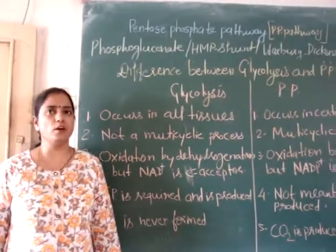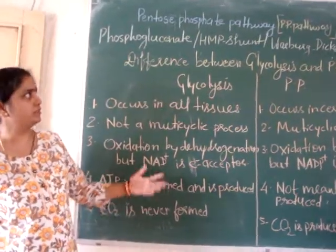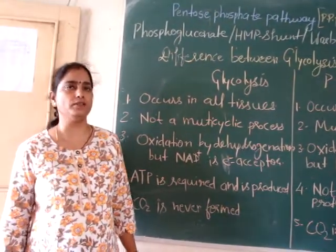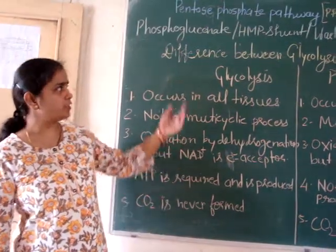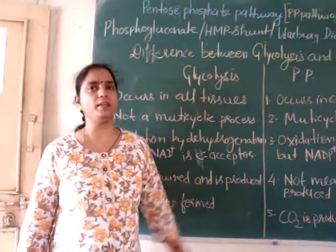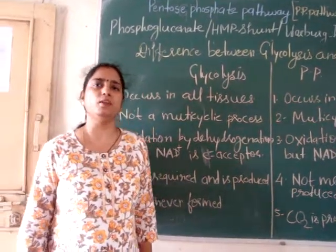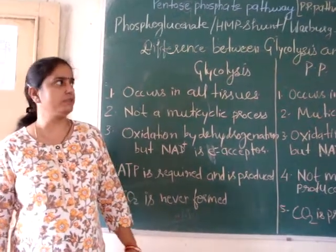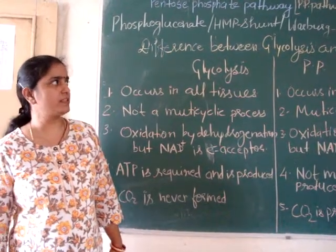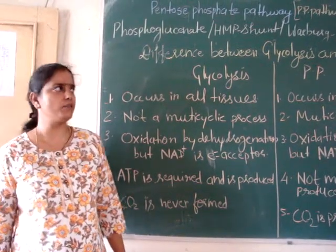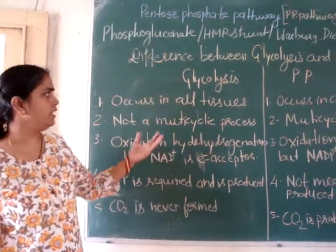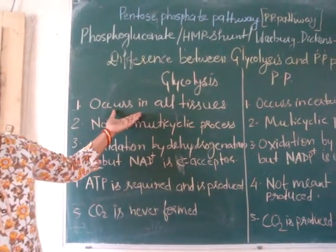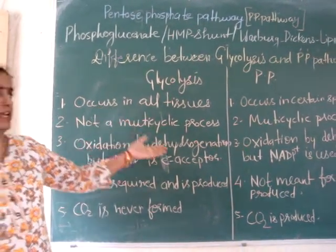In the first part of this video we have seen the reactions of the PP pathway. Now, what is the difference between glycolysis and PP pathway? The precursor for both glycolysis and PP pathway is glucose 6-phosphate. Glycolysis pathway, as all of you know, occurs in all types of tissues.